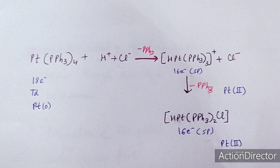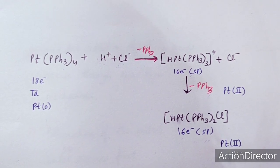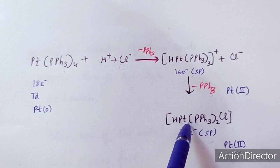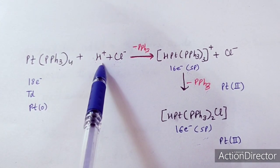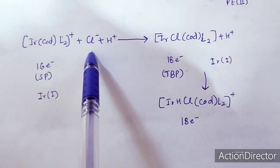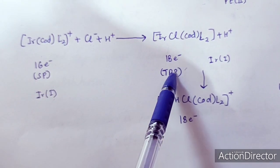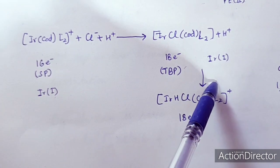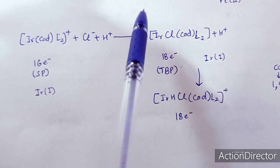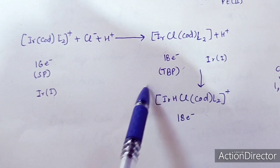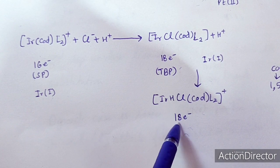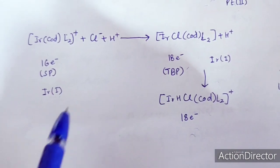The most common pathway is that in the first step H⁺ ion is added — this is the oxidation step — followed by Cl⁻ addition, which is the addition step. But sometimes Cl⁻ can add first and H⁺ after. When Cl⁻ attacks first, it increases the electron count but the oxidation state remains the same — that is the addition step. Then H⁺ adds in the oxidation step. Finally, the 16-electron system becomes an 18-electron system, Ir(I) to Ir(III). This is the second type of ionic mechanism.